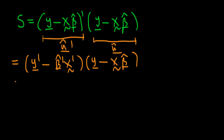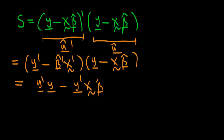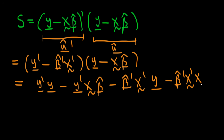We can simplify by multiplying out these two parentheses. The first term gives us Y transposed times Y. The second term gives us Y transpose times X times beta hat. The third term gives us beta hat transpose times X transpose times Y. And the final term gives us beta hat transpose times X transpose times X times beta hat. So we have our sum of squared residuals, and it's quite messy.